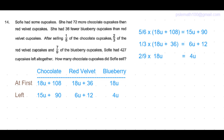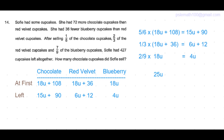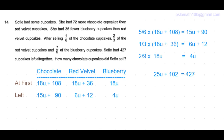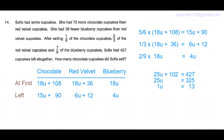The sum of all cupcakes left is 15 units plus 6 units plus 4 units, which is 25 units, plus 90 plus 12, which is 102, equal to 427. From there we get 25 units equal to 325, and one unit is equal to 13.